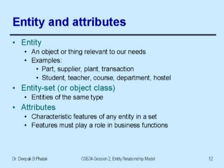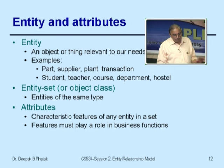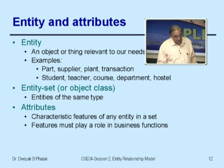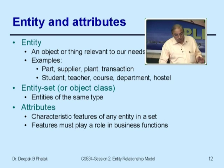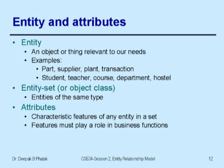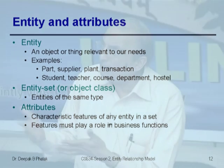We first define an entity: an object or thing relevant to our needs. A part is an entity, a supplier of parts is an entity, a plant is an entity, a transaction is an entity — each has information associated with it. Student, teacher, course, department, hostel are all entities. An entity set, or object class in OO terminology, is a set of entities of the same type. All students form an entity set; there are 4,500 students. Course is an entity set with 300 courses.